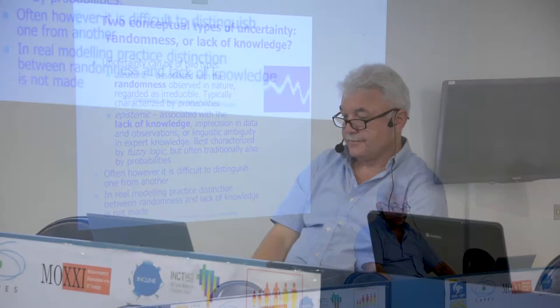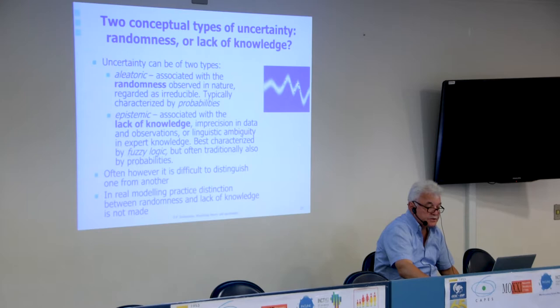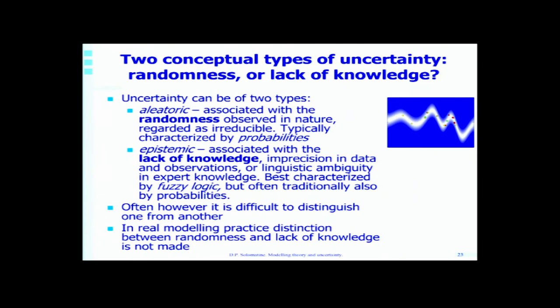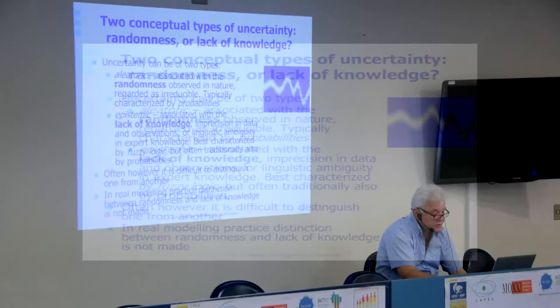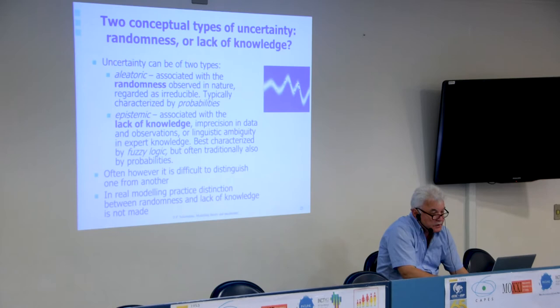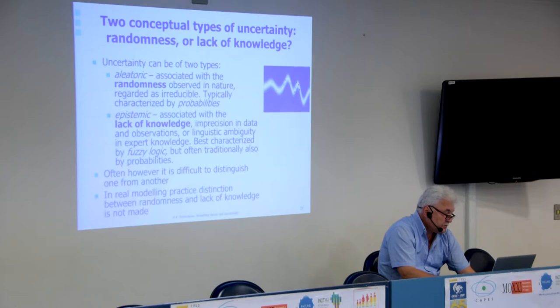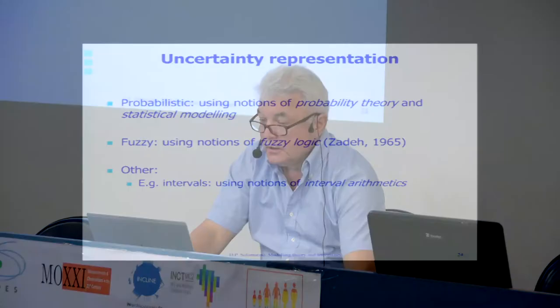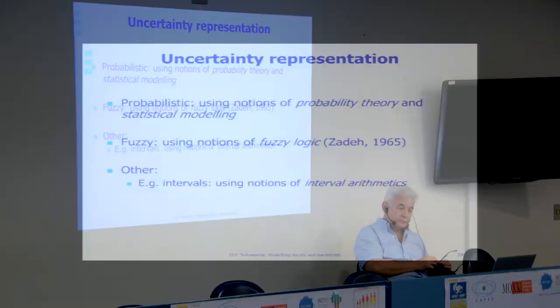In general, if you collect more information — about rainfall, about measurements — it becomes less uncertain because you know more and more about it. Also, some uncertainty moves from epistemic to aleatoric: if you had lack of knowledge and collected data, the epistemic part is gone, but the phenomenon may still be random. In most of the literature — maybe 90-95% of cases — we characterize any uncertainty by probabilities without distinguishing whether it's random or epistemic. Uncertainty representation: the main approach is probabilistic, where we associate probabilities with any event.